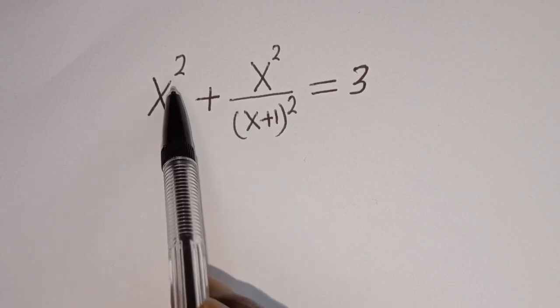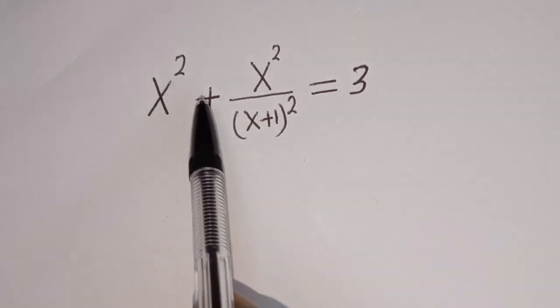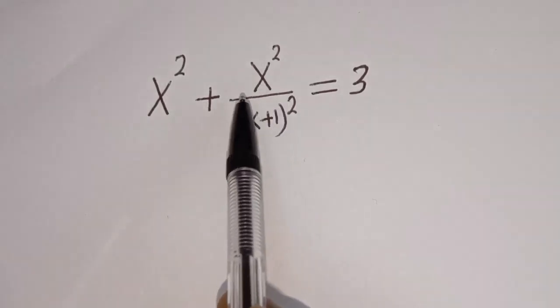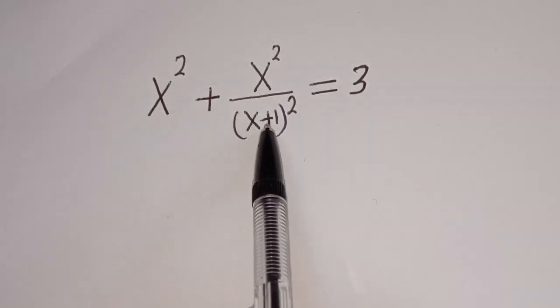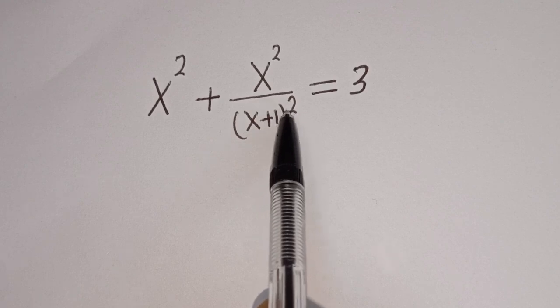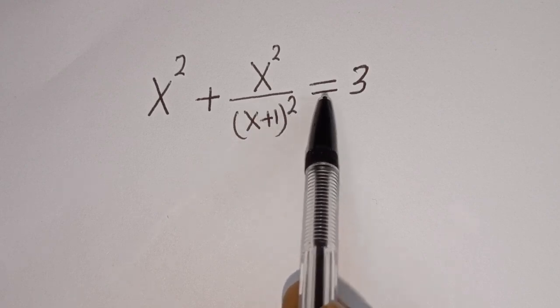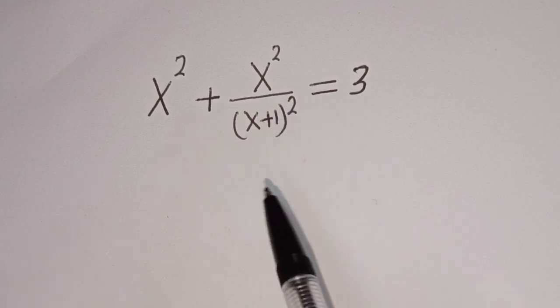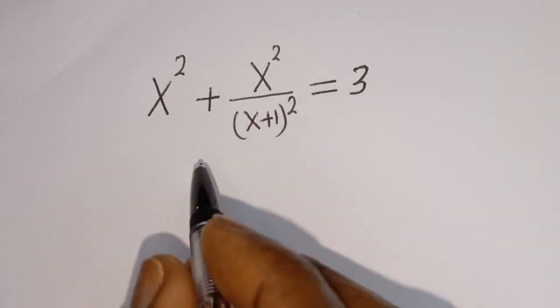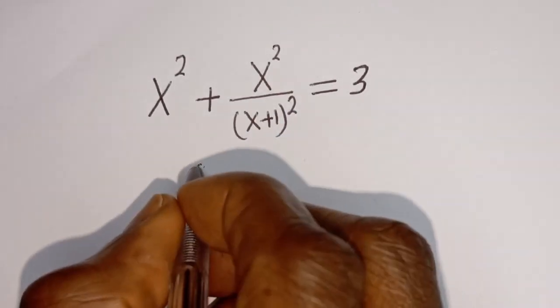Hello. How to solve for S in this equation: S squared plus S squared divided by (S plus 1) to the power of two is equal to three. Solution.